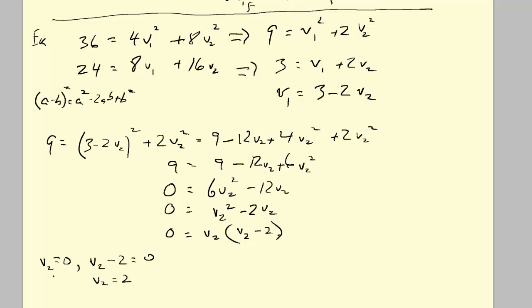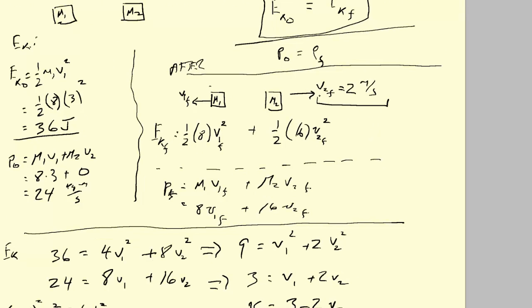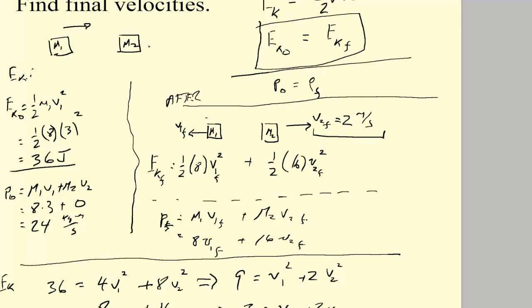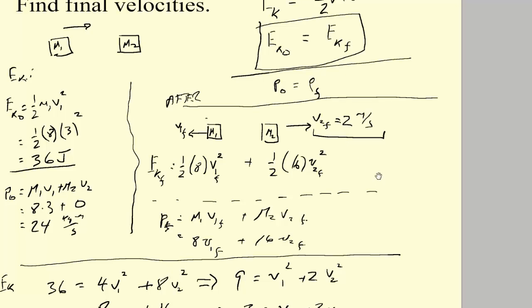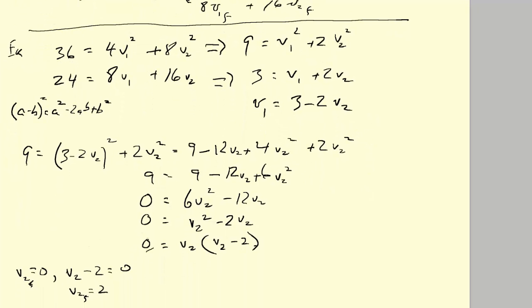Remember, my V2 here is supposed to be final. If we step out of the math world, we have to ask ourselves, does it make sense that V2 final is 0? That doesn't make any sense because we whapped it and it's not nailed down. It has to be moving to the right. So V2 is not 0. It must be 2 meters per second, positive, moving to the right.